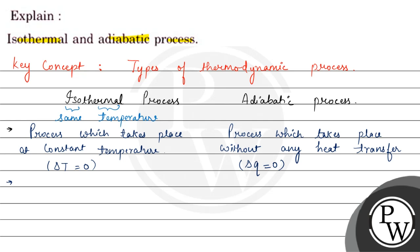Regarding heat transfer: transfer of heat is observed in isothermal process — since temperature remains constant, heat can still be absorbed or released. Whereas no transfer of heat is observed in an adiabatic process.